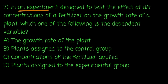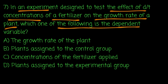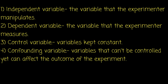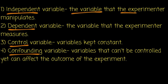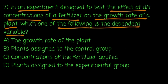In an experiment designed to test the effect of different concentrations of a fertilizer on the growth rate of a plant, which one of the following is the dependent variable? The independent variable is the one the experimenter manipulates — in this case, the concentration of the fertilizer.